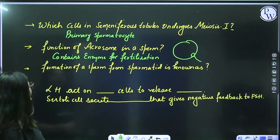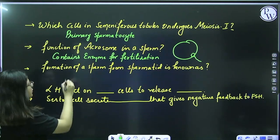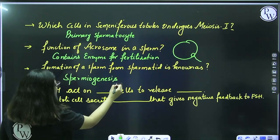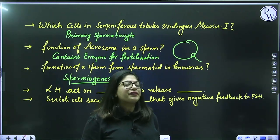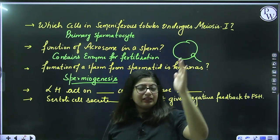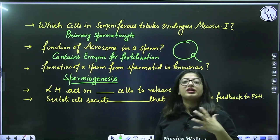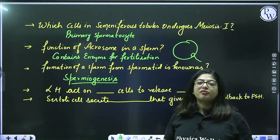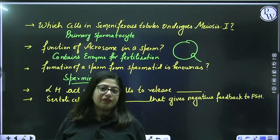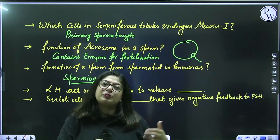Formation of a sperm from spermatid is known as spermiogenesis. Many students are confused about the difference between spermatogenesis and spermiogenesis. Spermatogenesis is the entire process — from formation of germ mother cells to formation and differentiation of sperm, including its release from Sertoli cells. Whereas spermiogenesis is specifically the process where spermatid gets converted into a mature, differentiated sperm. Spermiogenesis is a subprocess within spermatogenesis.